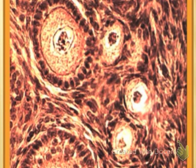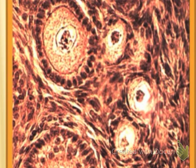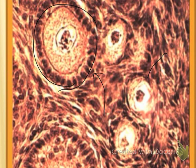Going back to the light microscope image: here we can see a primary follicle and a secondary follicle. In the secondary follicle, you can clearly see the follicle cells surrounding the egg cell. It's harder to see in the primary follicle, but that is what we're looking at.